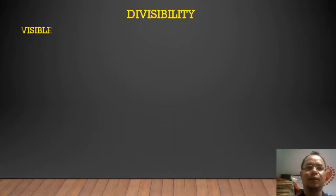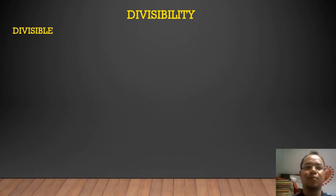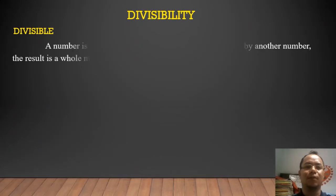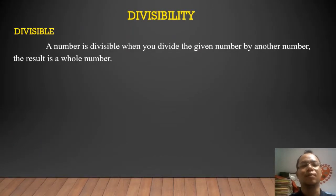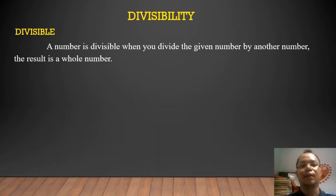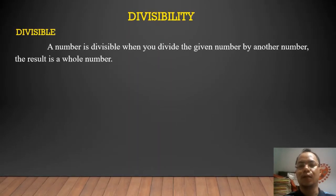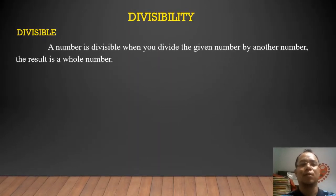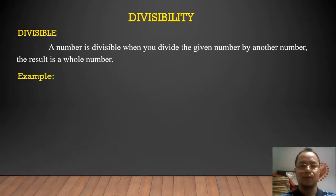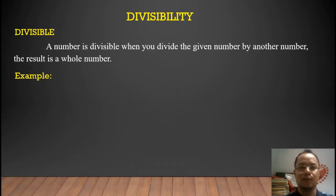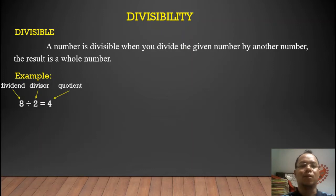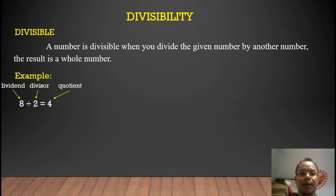Divisibility comes from the word divisible. A number is divisible when you divide that given number by another number and the result is a whole number. For example, 8 divided by 2 equals 4. Since our quotient is a whole number, we can say that 8 is divisible by 2.